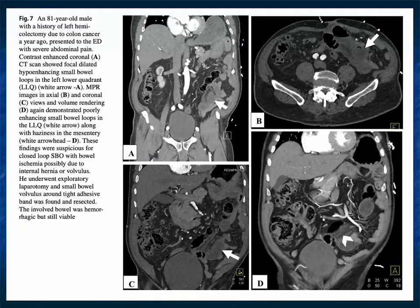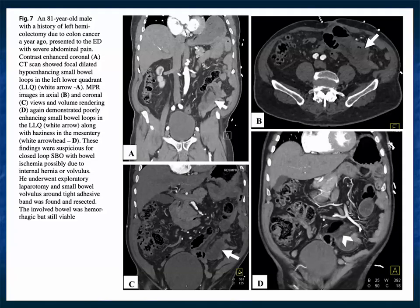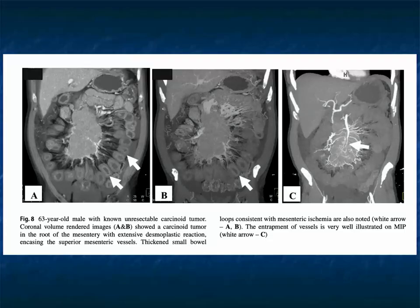Here's another example: a patient with left hemicolectomy for colon cancer presenting with abdominal pain has obstruction with mass effect on the left side of the abdomen. You'd worry about internal hernia or possible recurrent tumor, but a tight band was present causing volvulus. The bowel was hemorrhagic, but because it was caught early enough, the bowel was viable and the patient survived. Here's a patient with a carcinoid tumor with desmoplastic reaction — you can see thickening of the bowel. Carcinoid tumors can lead to ischemic bowel because of this desmoplastic reaction.